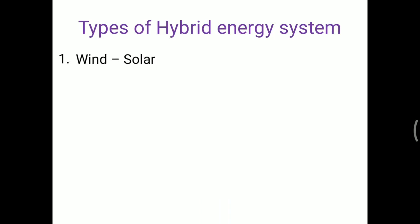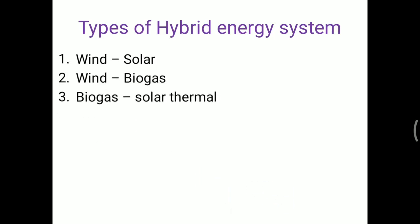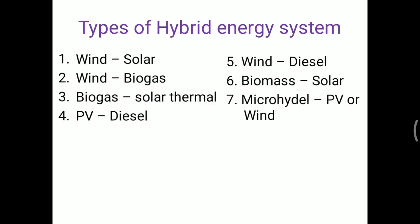The hybrid system has various types. The first type is wind and solar. The second is wind and biogas. The third is biogas and solar thermal — where a CSP system is used. There is also a wind and diesel system, a biomass and solar system, and finally a micro hydro with PV and wind system.